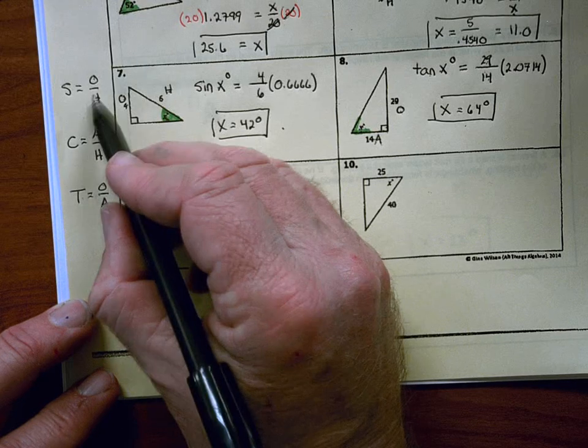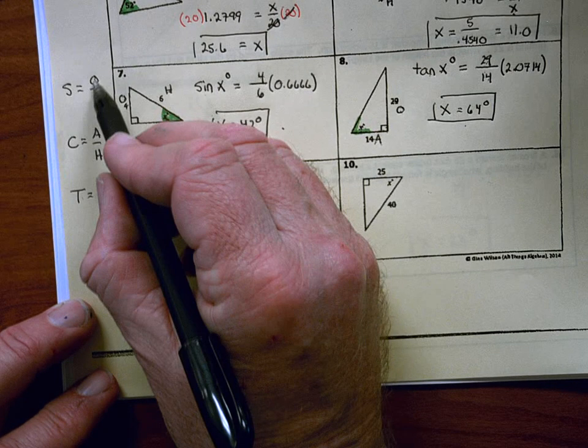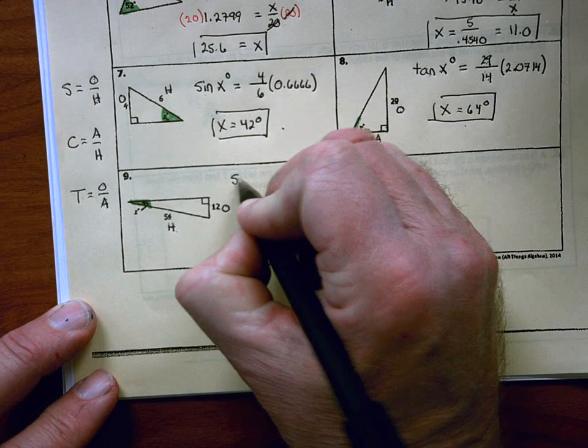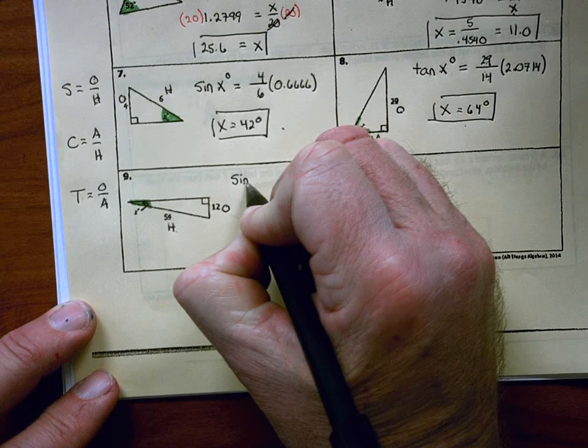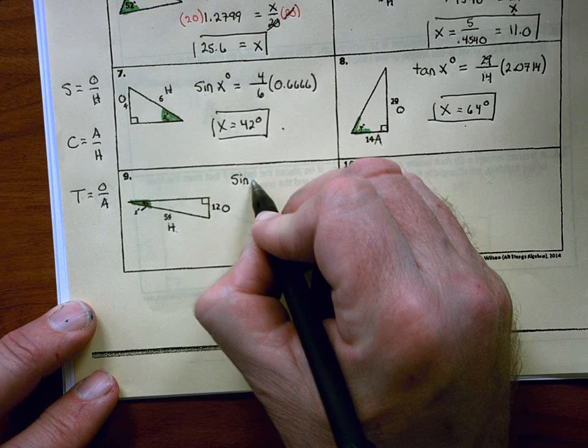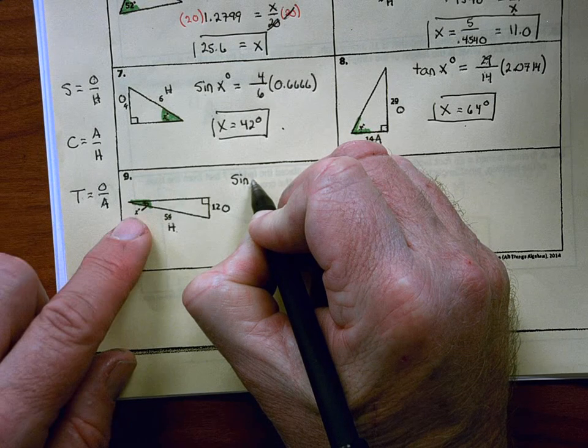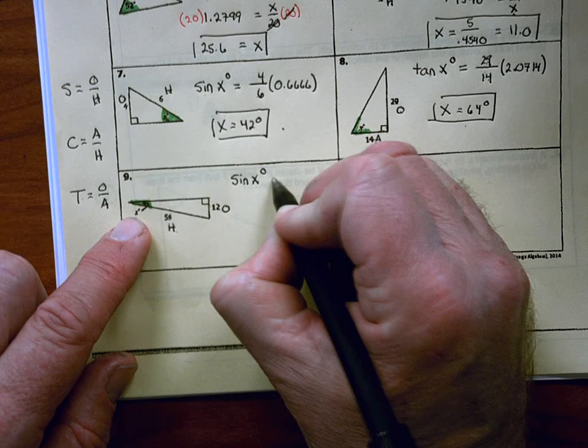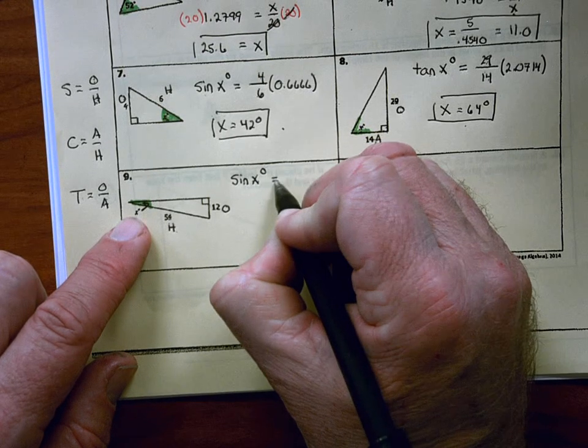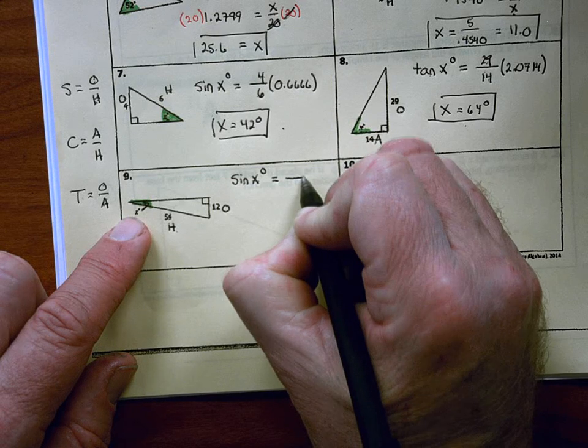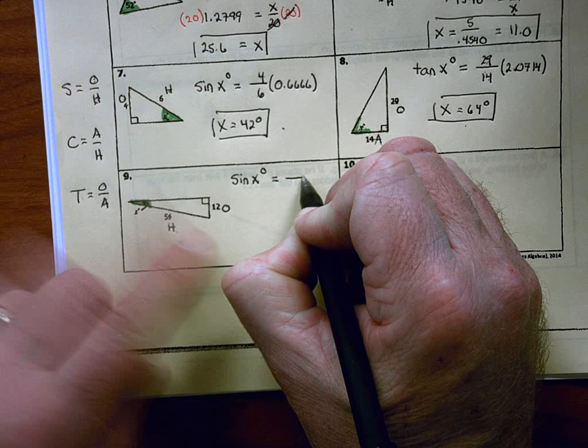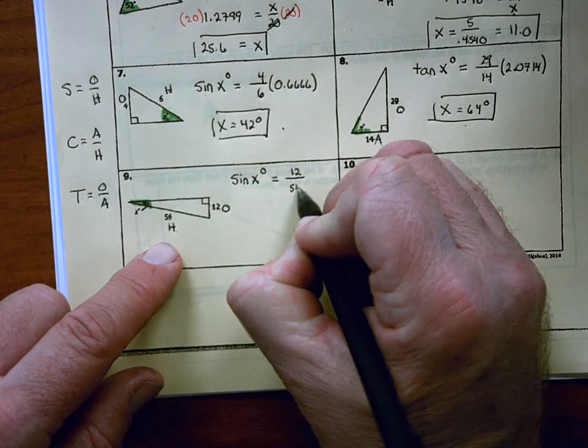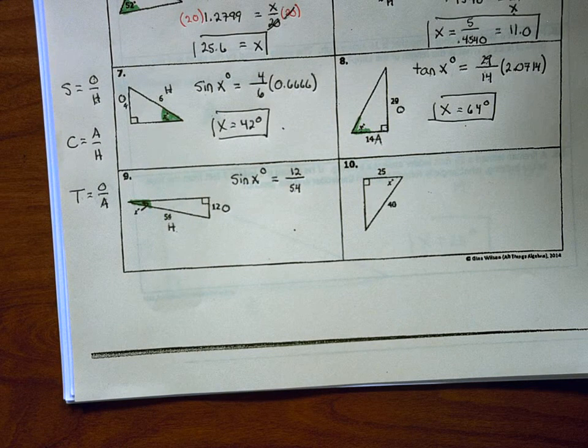O and H, which definition uses O and H. O and H right here. This tells me this is a sine problem. So I'm going to write down the abbreviation for sine, which is SIN. And then I'm going to set up my equation. Write the angle next to it, which is x in this case. Sometimes it's a number, but once again, this is a variable. Then we put an equal sign, and then on the right side of the equal sign, we set up a fraction. The sine fraction is opposite leg, which is 12, over hypotenuse, which is 54. Okay, and that's my equation that I'm going to use to solve for x.